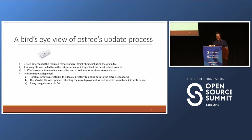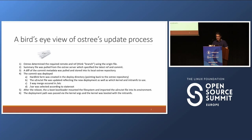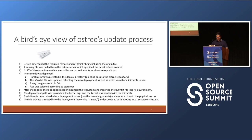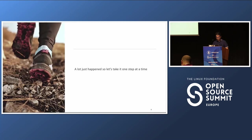A three-way merge occurred in slash etc. Slash var was selected according to the state route. After the reboot, the u-boot bootloader mounted the file system and imported the uenv.txt into its environment. The deployment file was passed via the kernel args, and the kernel was booted with the initramfs. The initramfs determined which deployment to use via the kernel args and mounted it onto the physical sysroot. The init process chrooted into the deployment, becoming its new slash, and proceeded with booting into user space as usual. A lot just happened, so let's take it one step at a time.